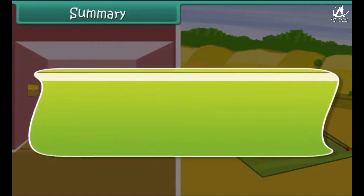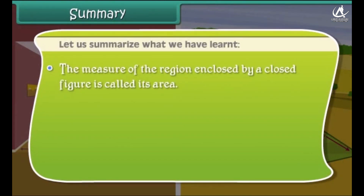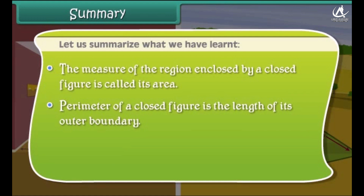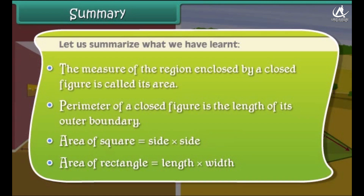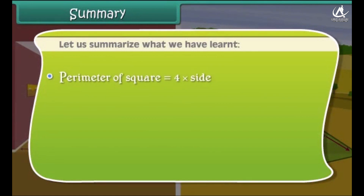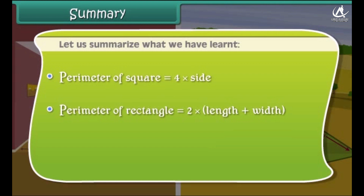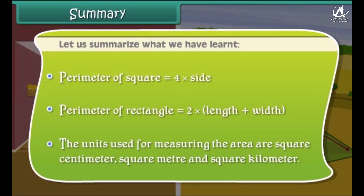Let us summarize what we have learned. The measure of the region enclosed by a closed figure is called its area. Perimeter of a closed figure is the length of its outer boundary. Area of a square is equal to side multiplied by side. Area of a rectangle is equal to length multiplied by width. Perimeter of a square is equal to 4 multiplied by side. Perimeter of a rectangle is equal to 2 multiplied by the sum of length and width. The units used for measuring area are square centimeter, square meter, and square kilometer.